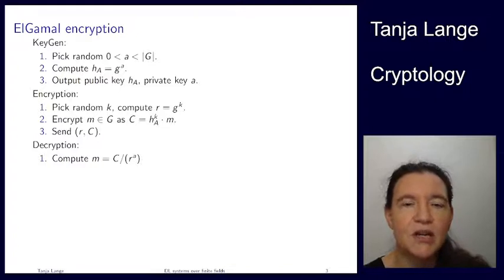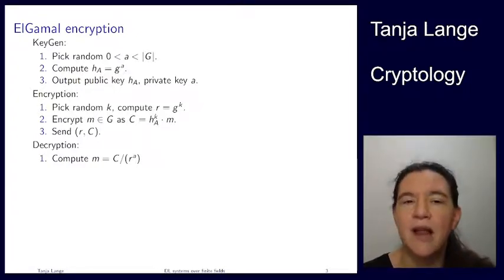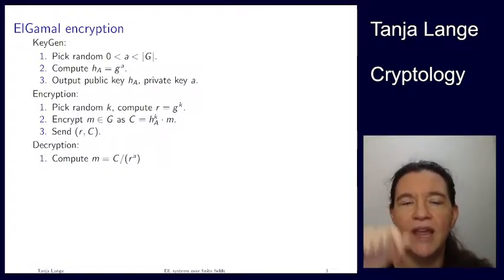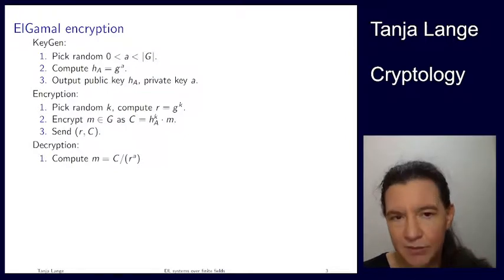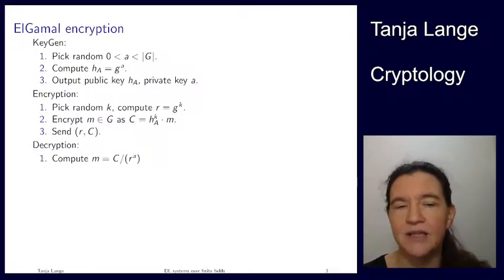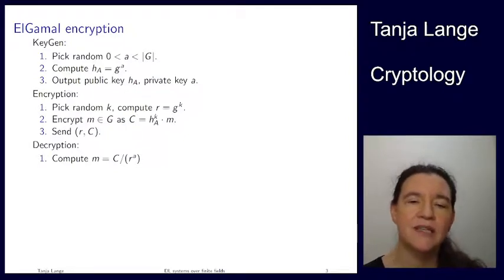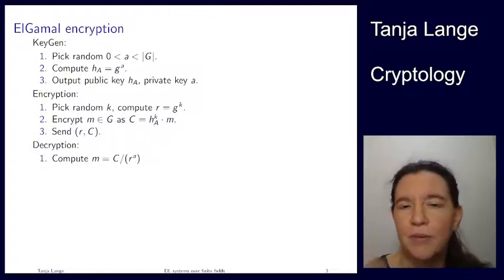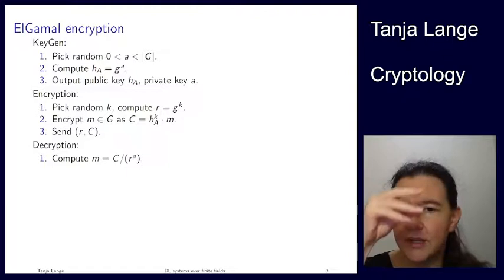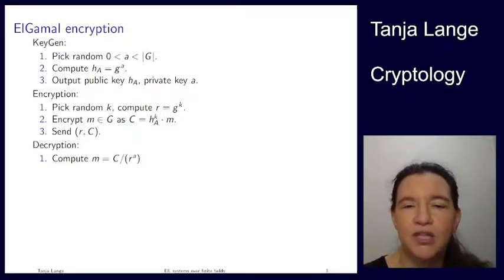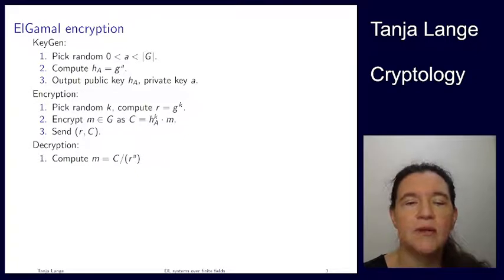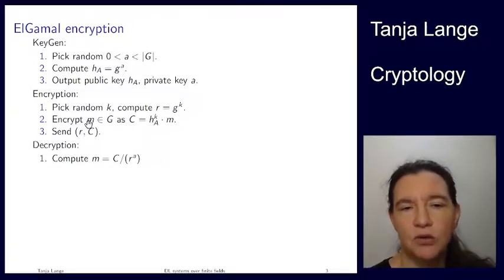The key generation here looks just the same as for Diffie-Hellman. Since I'm talking about finite field discrete logarithms I'm writing it in a multiplicative way, so it's G to the A as the public key. The encryption works by starting basically the same as what Bob would do in a Diffie-Hellman key exchange — Bob picks some random K, computes G to the K, and normally Bob would send G to the K so both can compute G to the AK.